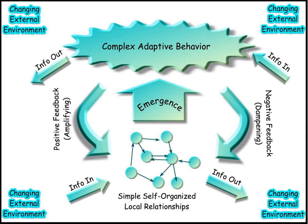They are complex in that they are dynamic networks of interactions, and their relationships are not aggregations of the individual static entities — i.e., the behavior of the ensemble is not predicted by the behavior of the components. They are adaptive in that the individual and collective behavior mutate and self-organize corresponding to the change-initiating micro-event or collection of events. They are a complex macroscopic collection of relatively similar and partially connected micro-structures, formed in order to adapt to the changing environment and increase their survivability as a macro-structure.